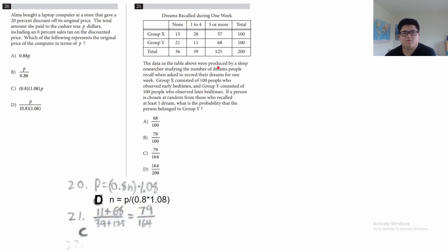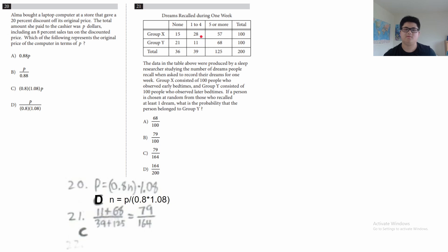Question 21: a sleep researcher has groups X (early bedtimes, 100 people) and Y (later bedtimes, 100 people) recording their dreams for one week. If a person is chosen at random from those who recorded at least one dream, what is the probability the person belongs to group Y? Ignore the zero-dreams column. Group Y people who recorded at least one dream: 11 + 68 = 79. Total people with at least one dream: 39 + 125 = 164. Probability = 79/164. The answer is C.